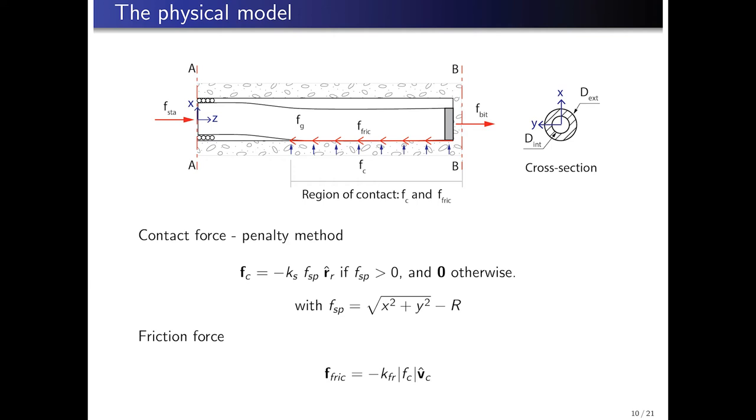Next, the contact force and the friction force are defined. The contact force, F_c, is defined to be proportional to the penetration of the structure into the soil. The penetration value is given by the function F_sp and the proportional coefficient by k_s. The function F_sp takes the form of a square root of x squared plus y squared minus r, where r is the radius of the borehole cylinder. The direction of the contact force is in the direction of the normal of the cylinder, which is here given by F_r. And on the other hand, the friction force, F_fric, is proposed to be proportional to the normal contact force.